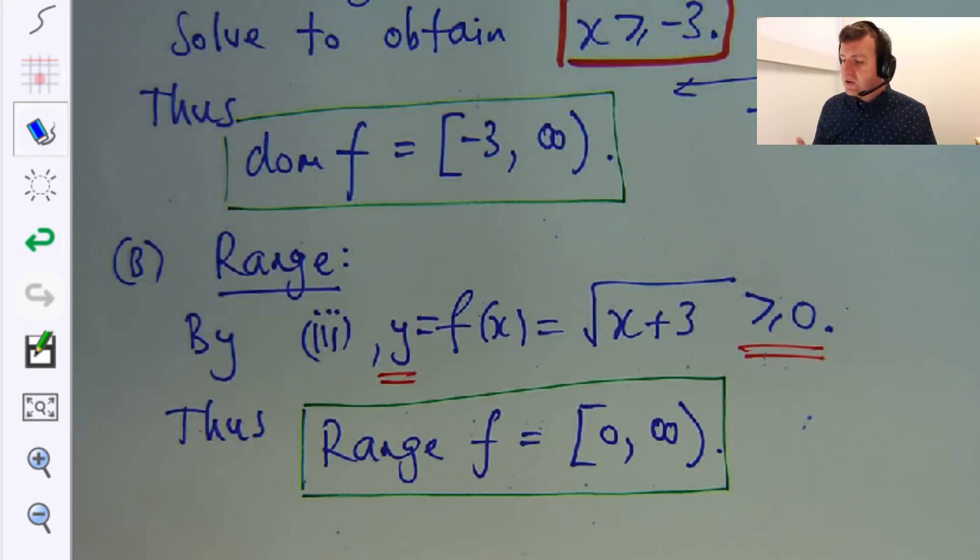Now you could graph this function. I'll talk about graphing in other videos. But at the moment, we're just taking an algebraic approach to finding these domain and range. Domain and range are important because domain tells us: what can I put into my function to make it work? And range is important because it tells us about the outputs. What kind of outputs would I expect from a given function?